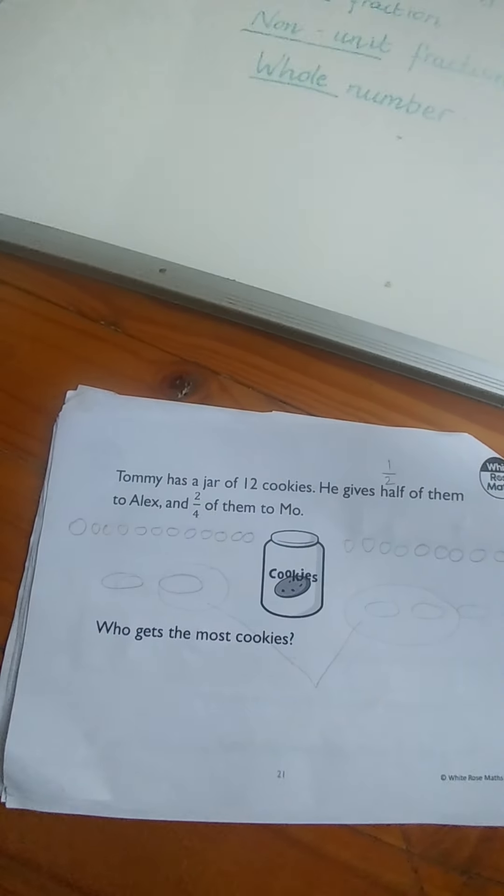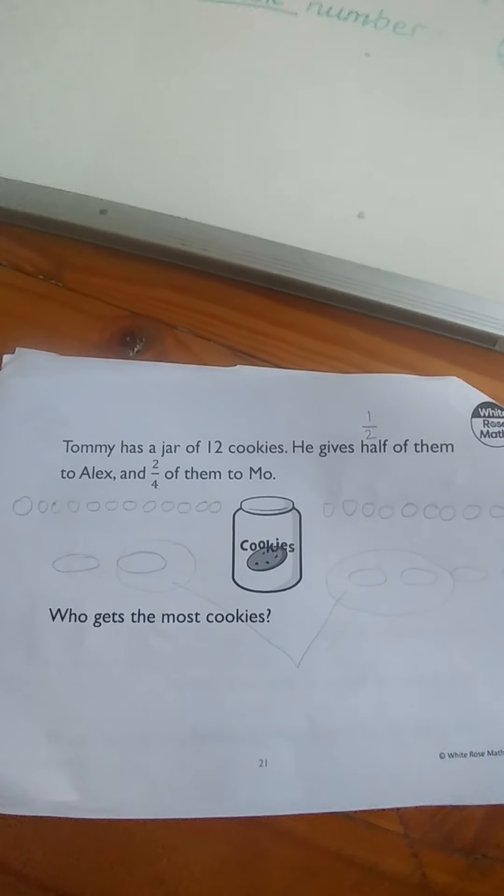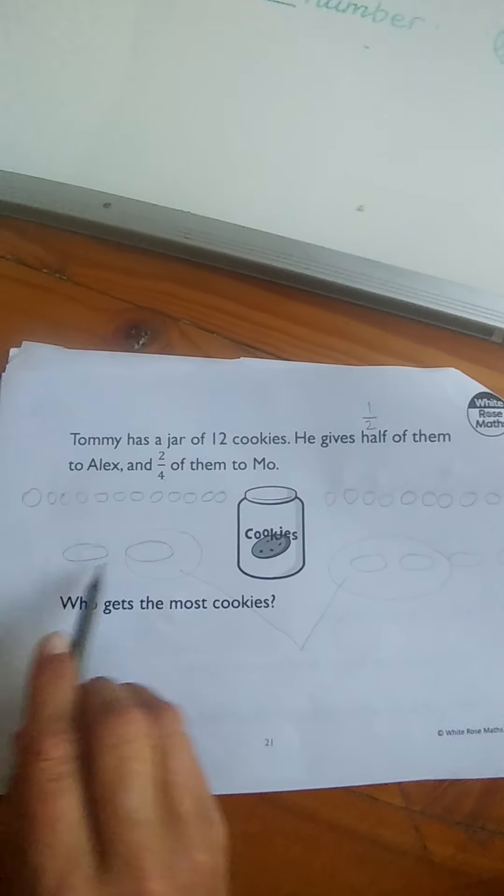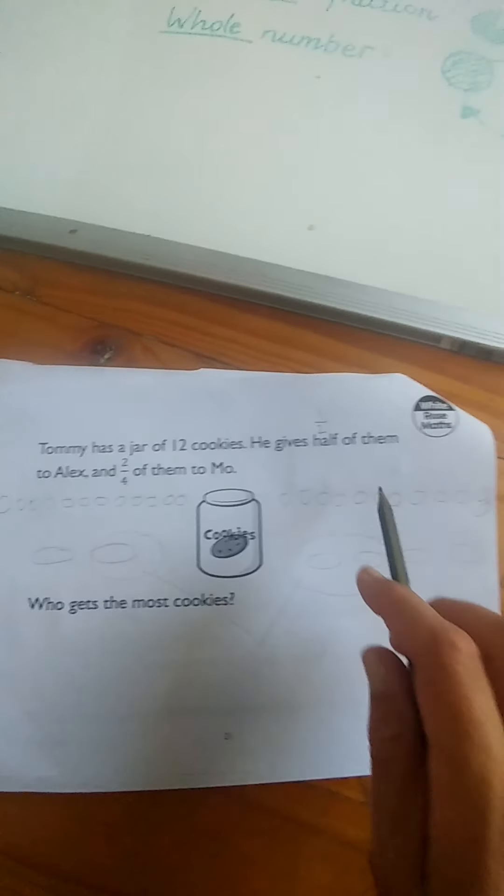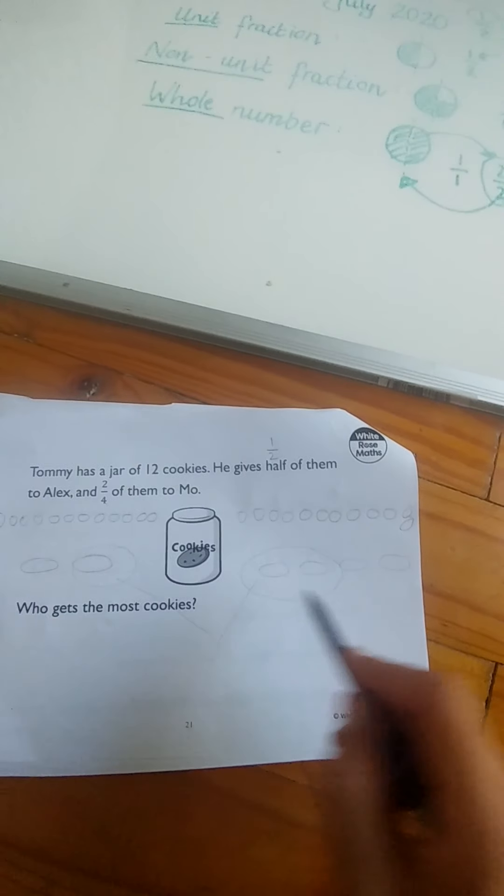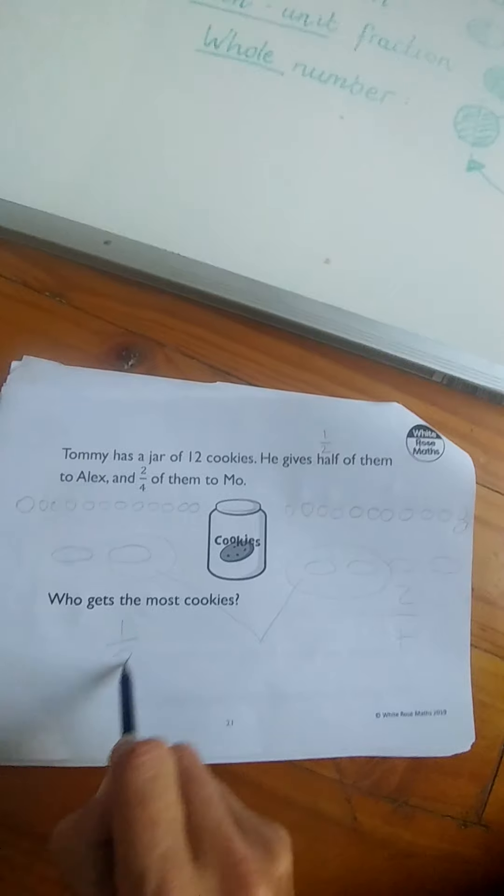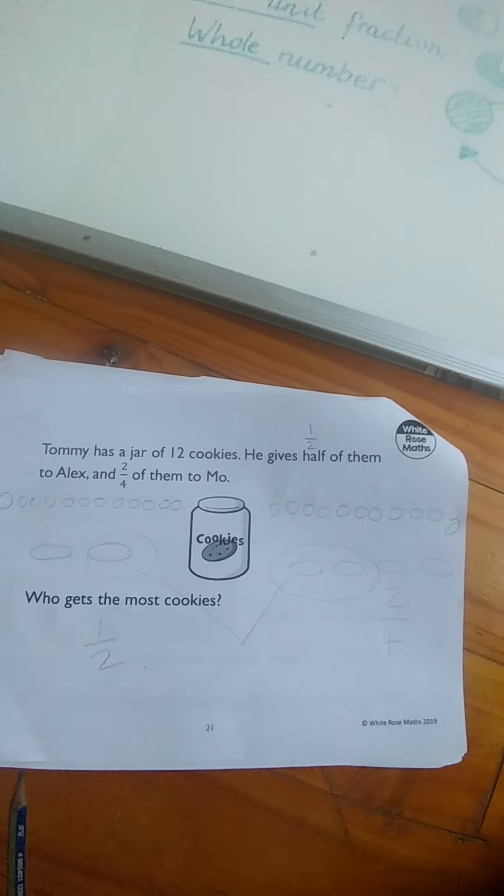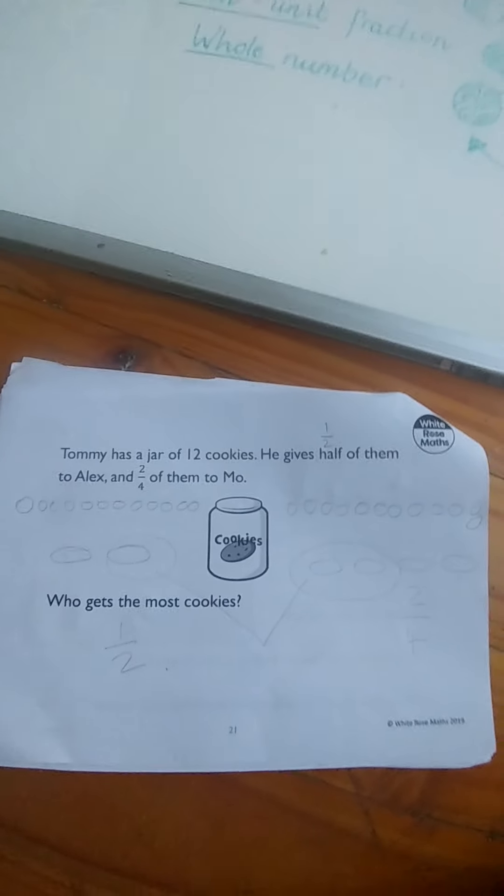And then we'll carry on with the rest tomorrow. So sort your 12 cookies into two groups, one, one, one, one - remember how we do it. Sort these into four groups. Tell me how many come from those two groups because that would be two over four, and how many come from this one group because that would be one-half. And you'll find a very interesting answer. Okay, see you tomorrow.